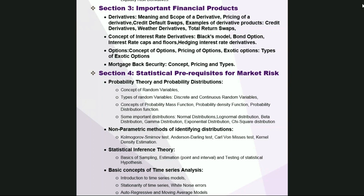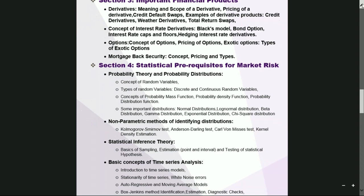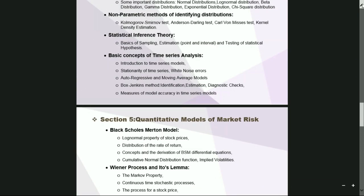These first three sections introduce us to what market risk is, what are the important sources from which the risk stems, and what are the important financial instruments through which the risks may be transmitted. Once we know the source and the channels, the next part is understanding how to model these risks and what are the prerequisites for modeling. That is where Section 4 comes in, introducing prerequisites which comprise probability theory, distributions, non-parametric methods, statistical inference theory, and most importantly, the concepts of time series models.